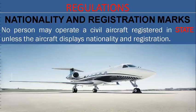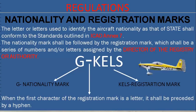The regulations related to nationality and registration marks state that no person may operate a civil aircraft registered in a state unless the aircraft displays nationality and registration marks. The letters used to identify the aircraft nationality shall conform to the standards outlined in ICAO Annex 7. The nationality mark, which is a prefix of one or two character alphanumeric code, shall be followed by a registration mark, which is a suffix of one to five characters assigned by the director of the registry.